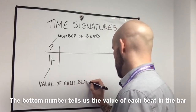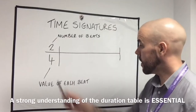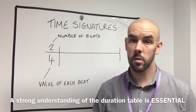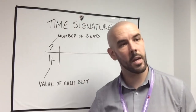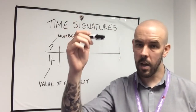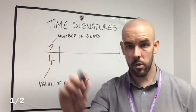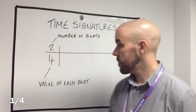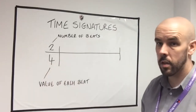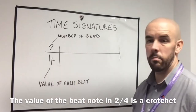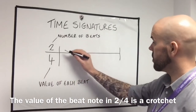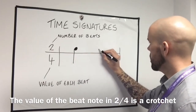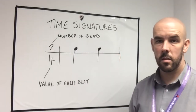You might be thinking, well, 4 isn't a value. Think back to the duration table — the table of relative note values and fractional values in relation to the whole note. The semibreve was the whole note, then you went down to a half note which is your minim, the two, and then down to a quarter note which was the four — the crotchet. So the value of the beat note is a crotchet in a 2-4. There's one crotchet, and there's my second crotchet.